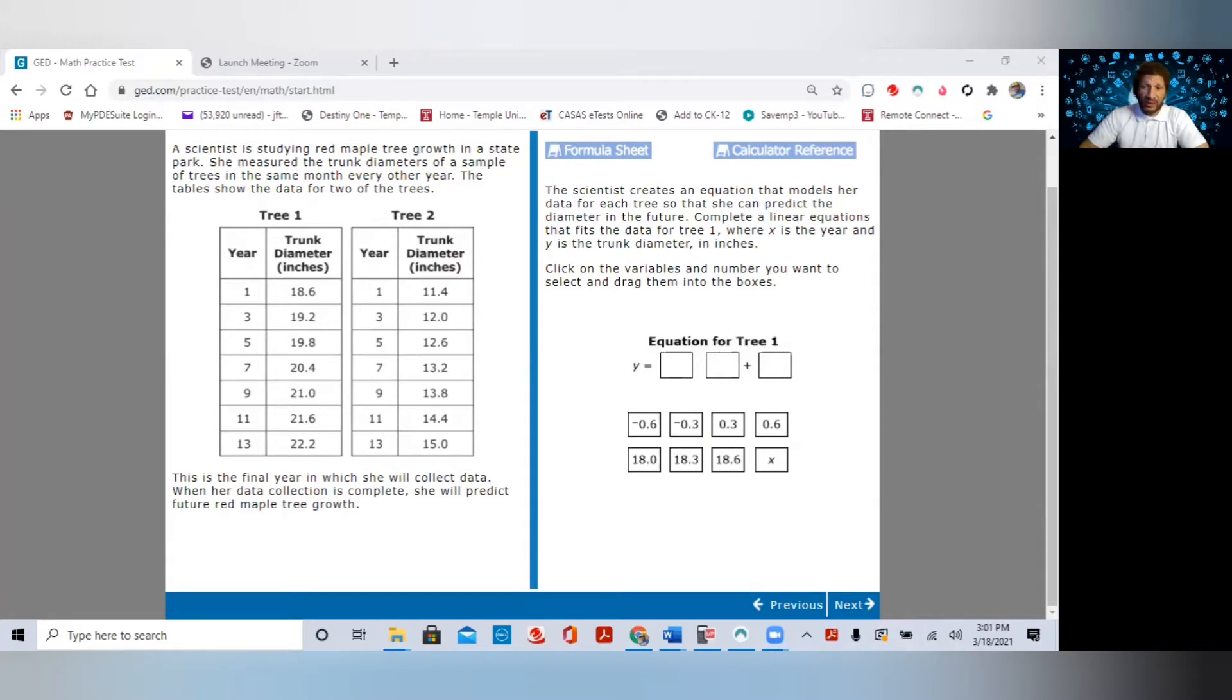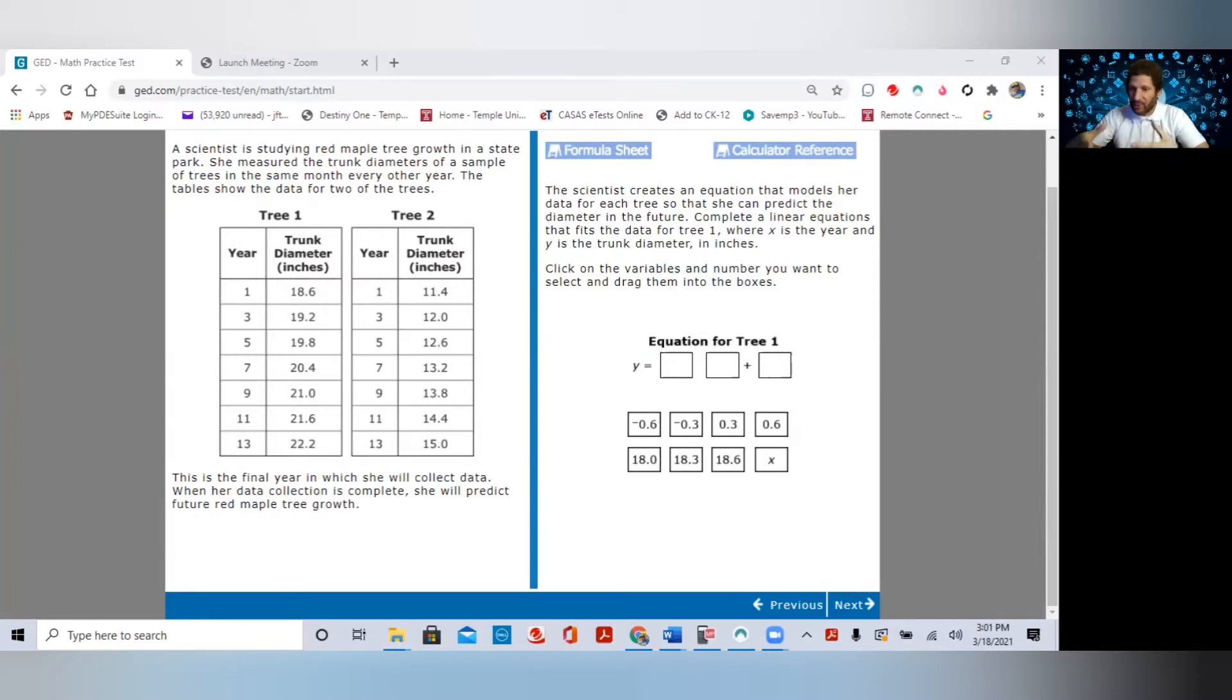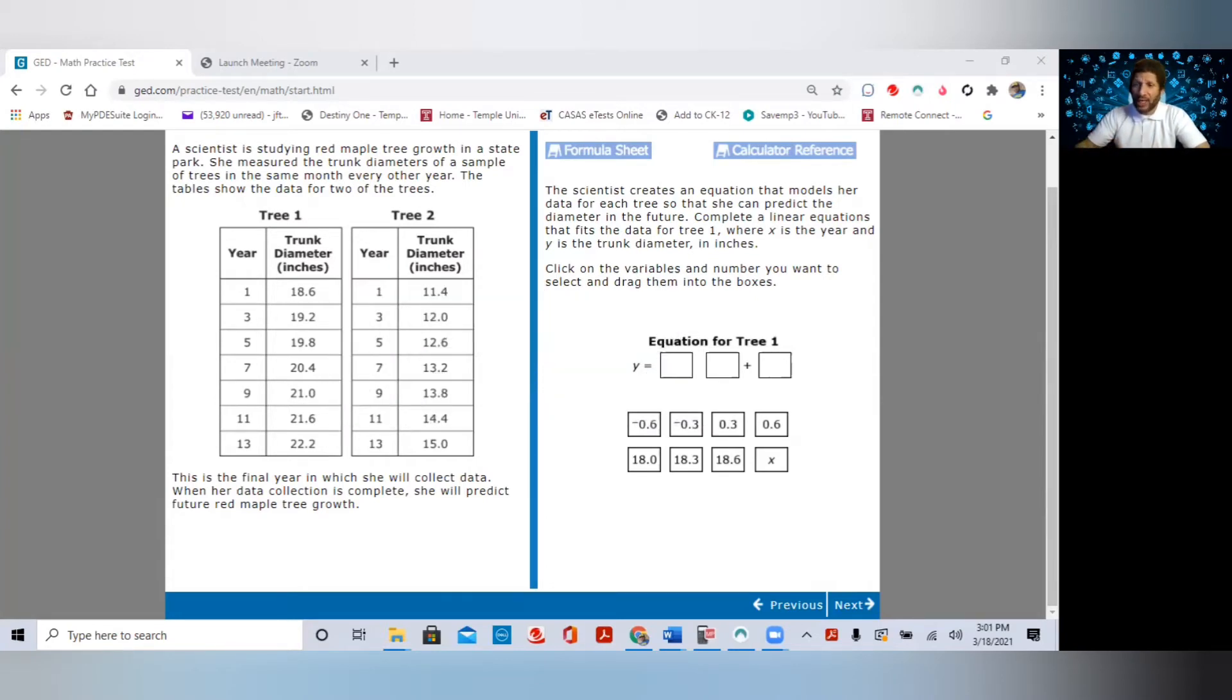The scientist creates an equation that models her data for each tree so that she can predict the diameter in the future. Complete a linear equation that fits the data for tree one, where X is the year and Y is the trunk diameter in inches. Click on the variables and number you want to select and drag them into the boxes. I know you're looking at this problem saying, what? What do they want me to do? When you get yourself worked up on exam, what I want you to do is take a deep breath and you say to yourself, what do I know? That's the first thing. So no matter how difficult you think a problem is, I want you to take a deep breath and I want you to say, what do I know?